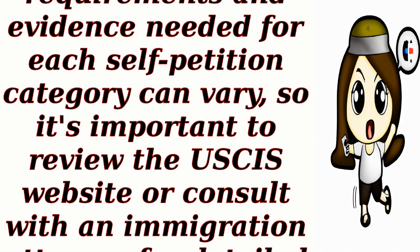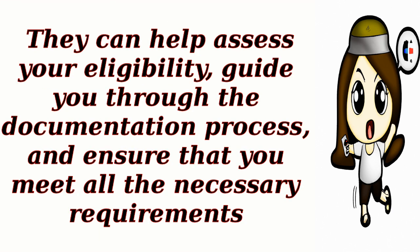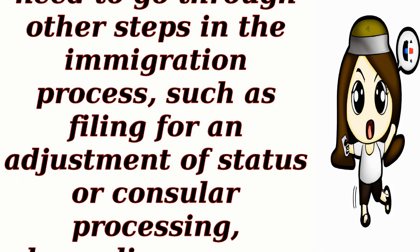The specific requirements and evidence needed for each self-petition category can vary, so it's important to review the USCIS website or consult with an immigration attorney for detailed guidance. In addition to Form I-140, you may also need to go through other steps in the immigration process, such as filing for an adjustment of status or consular processing, depending on your current immigration status and location.